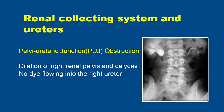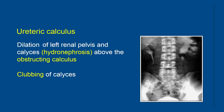This is a case of pelviureteric junction obstruction on the right side. As you can see, there is dilatation of the right renal pelvis and the calices, and no dye is seen passing distally into the ureter. This is a case of left-sided hydronephrosis with dilatation of the left renal pelvis and calices above an obstructing calculus, which has to be confirmed from the plain KUB film as well.